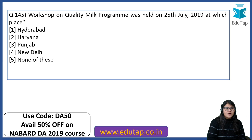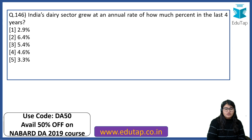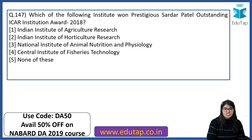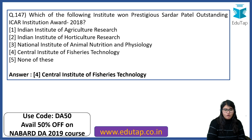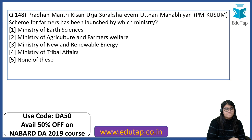Workshop on Quality Milk Program was held on 25th July 2019 at New Delhi. India's dairy sector grew at an annual rate of 6.4% in the last four years. Which institute won the prestigious Sardar Patel Outstanding ICAR Institution Award 2018? The right answer is Central Institute of Fisheries Technology. Pradhan Mantri Kisan Urja Suraksha evam Uttam Mahabhiyan scheme has been launched by the Ministry of New and Renewable Energy.